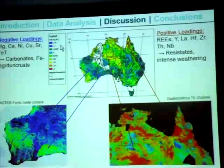Looking at the ASTER ferric oxide map content — released just yesterday officially at this conference — you can see these correspond to high ferric values in those two regions. The positive loadings for PC1 are highly representative of rare earth and associated elements, interpreted to indicate an abundance of resistate minerals like zircons — an indication of intense weathering processes. These are shown in warmer colors. For example, the Cape Peninsula corresponds to the thorium channel of the EVIS-1 radiometrics, with good correspondence, as well as the area in the southern Northern Territory.